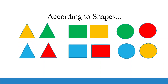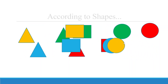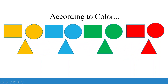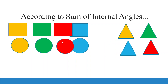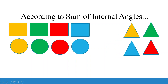We can name the clusters accordingly. The first cluster: triangle. Second: square. Third: circle. Based on color, we can group them as yellow, blue, green, and red. Another way to cluster is by sum of internal angles — for example, 360 degrees for a square and 180 degrees for a triangle.